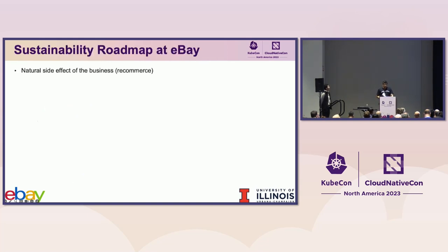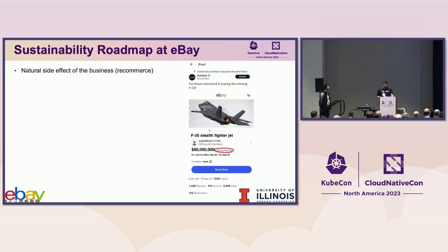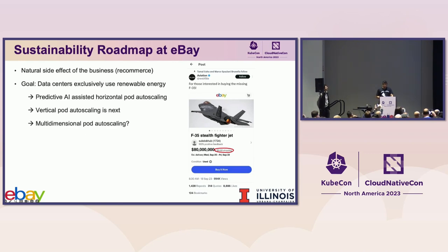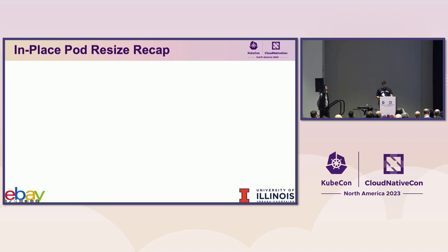Sustainability has been an important business goal at eBay. When your business is about finding new purpose for once-loved but abandoned items, reuse and sustainability comes naturally. At the data center level, the goal is exclusive renewable energy use. HPA with Predictive AI to better estimate replication needs is an ongoing effort. Next year there are plans to take up VPA to right-size pods and containers, and this is where in-place pod resize is an important piece of the puzzle — it avoids workload disruption due to vertical scaling and the overhead of scheduling and starting up new pods.